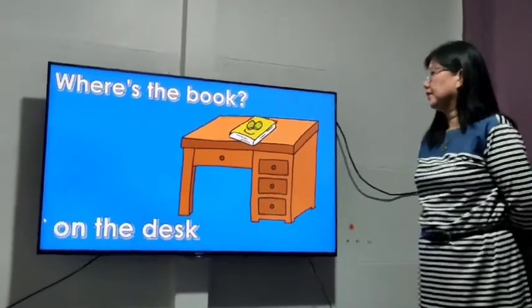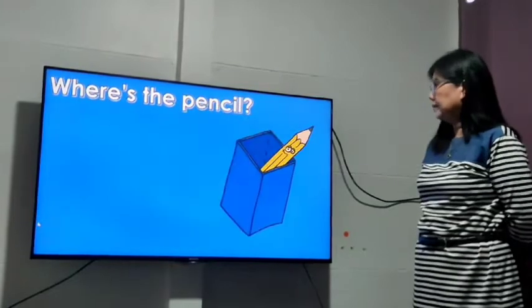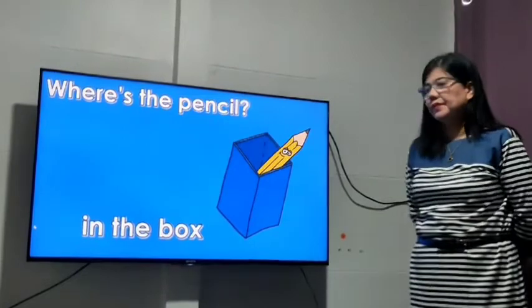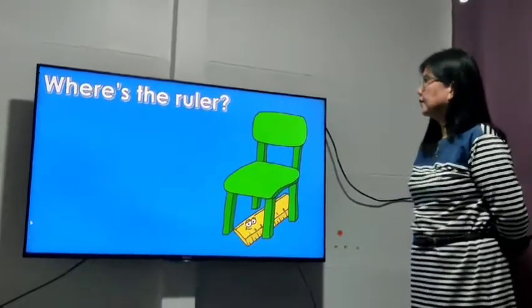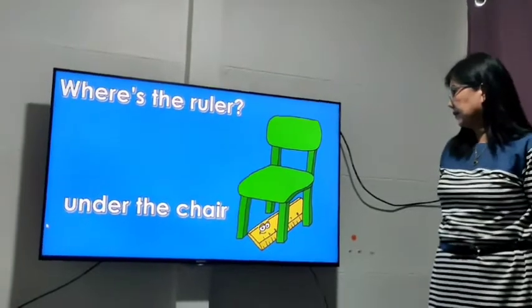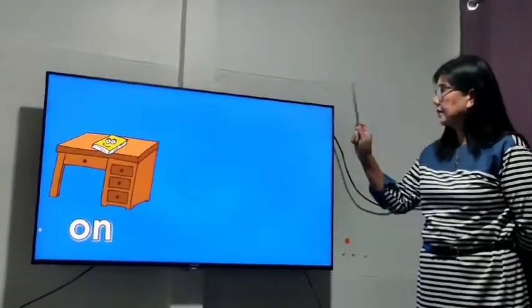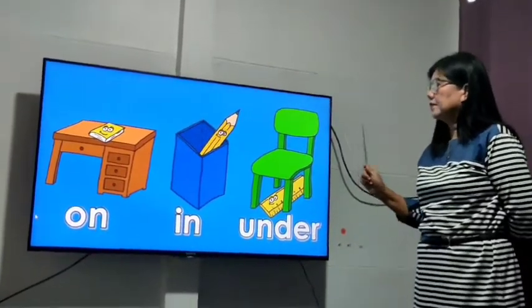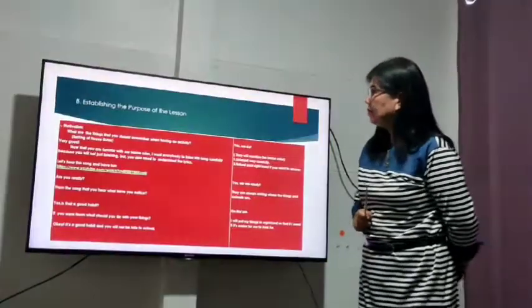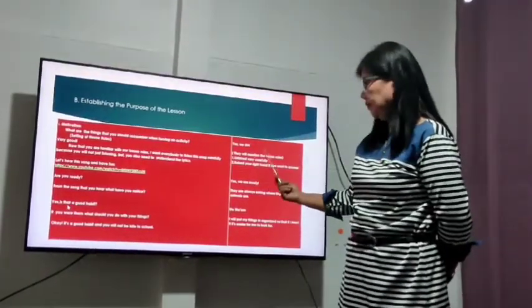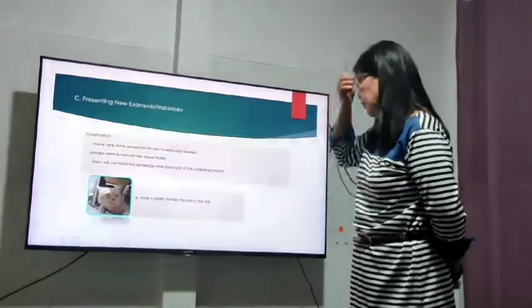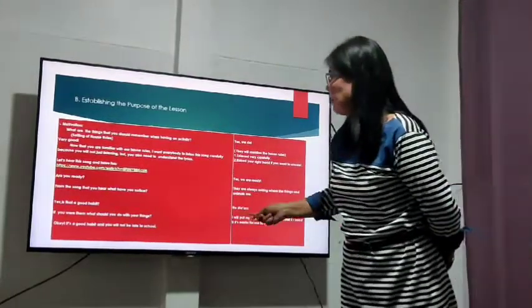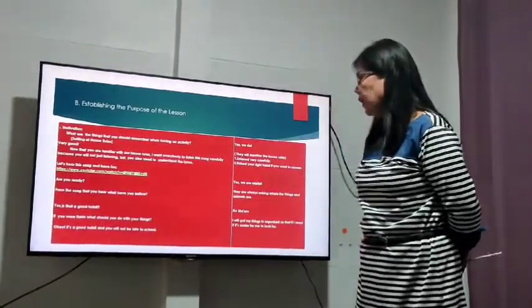Where's the book? Where is it? Where is it? On the desk, on the desk. Where's the pencil? Where is it? Where is it? In the box, in the box. Where's the ruler? Where is it? Where is it? Under the chair, under the chair. On, in and under. See you next time.